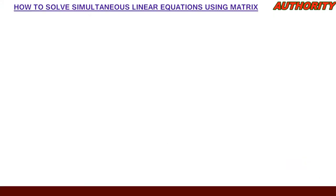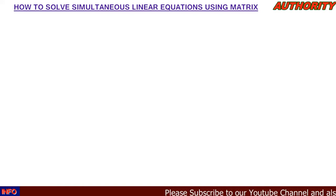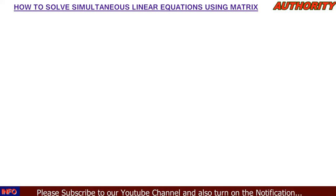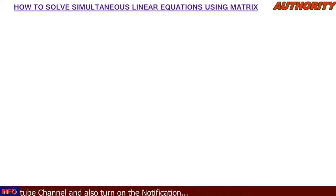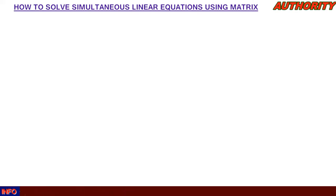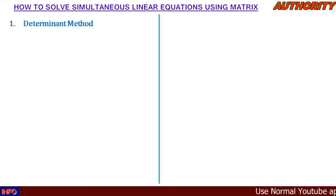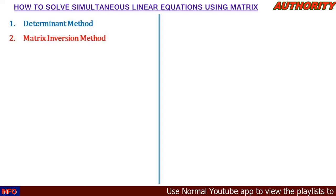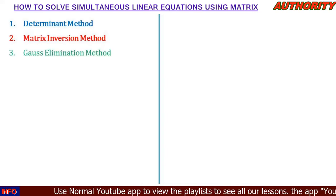Welcome. Today let's talk about how to solve simultaneous linear equations using matrices. You can solve two equations with two unknowns, three equations with three unknowns, four equations with four unknowns, and so on. Under this topic, there are three methods: number one is the determinant method, number two is matrix inversion, and number three is Gauss elimination.